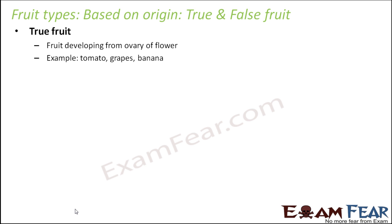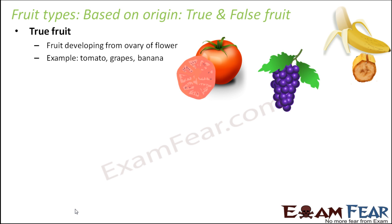Let me remind you — tomato is a fruit, not a vegetable. Many people feel that tomato is a vegetable, but basically it is a fruit. Tomato, grapes, and banana are nothing but the ovary — they are actually the ripened ovary.